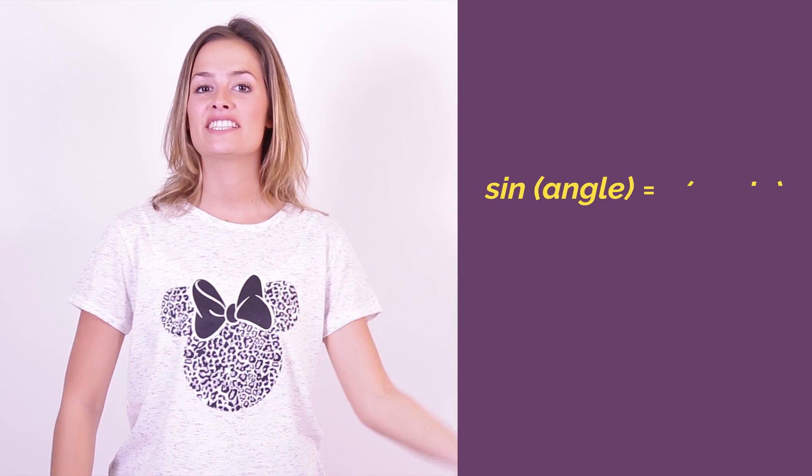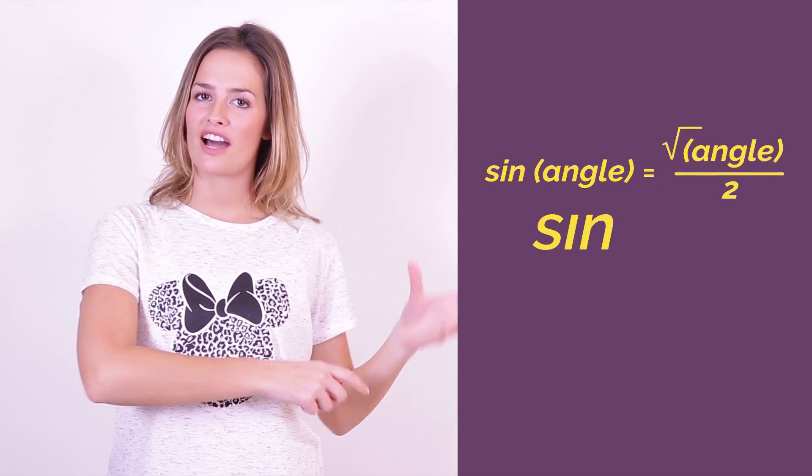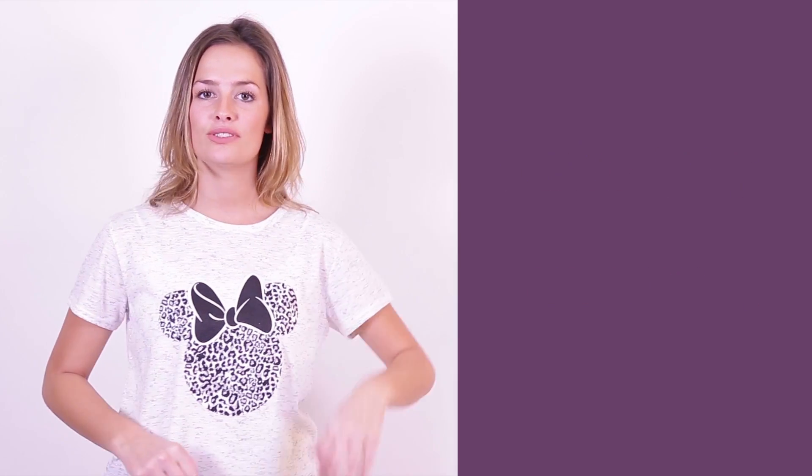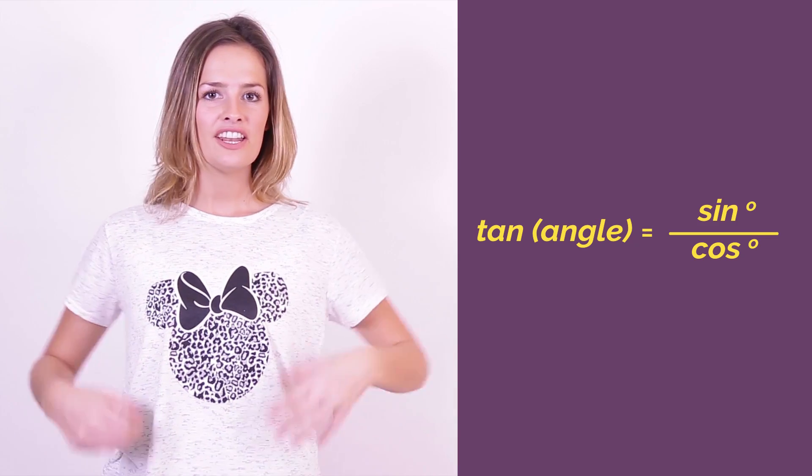You just need to remember to divide by two and square root on top. For sine, we start from zero and work up. And for cos, we start from four and work down. Remember that the angles are zero, 30, 45, 60 and 90. And that for tan, we just have to divide the sine by the cos. Not hard.